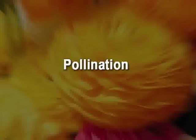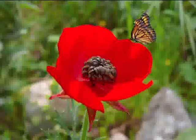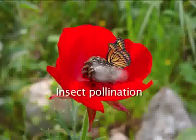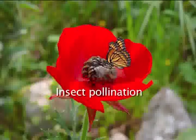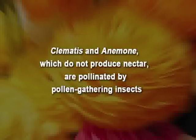Coming to the pollination system: because there is a wide range of flower structures in Ranunculaceae, it is associated with a diverse array of pollination syndromes. Most of the species are insect-pollinated. Although there are some species, like Thalictrum, which are wind-pollinated — their pollination is anemophilous. Two more genera, Clematis and Anemone, do not produce nectar; therefore they are pollinated by pollen-gathering insects that feed on pollen and in that process pollinate the flowers.